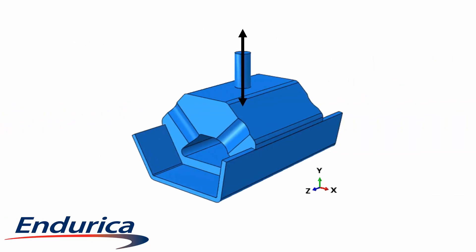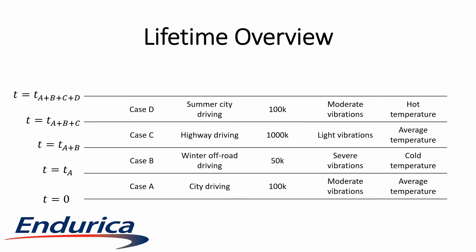Let's go through an example using this transmission mount. The mount is subjected to the weight of the transmission in the vertical direction, as well as vibration forces in all directions. Over the mount's lifetime, it must endure four consecutive load cases. Starting at time zero, case A represents city driving made up of 100,000 cycles of a moderate vibration history at an average temperature. We will always want to know how much life is left in the part after each load case. This is referred to as the residual life. The residual life is computed by starting from the end of the previous analysis and integrating a nominal history until end of life.